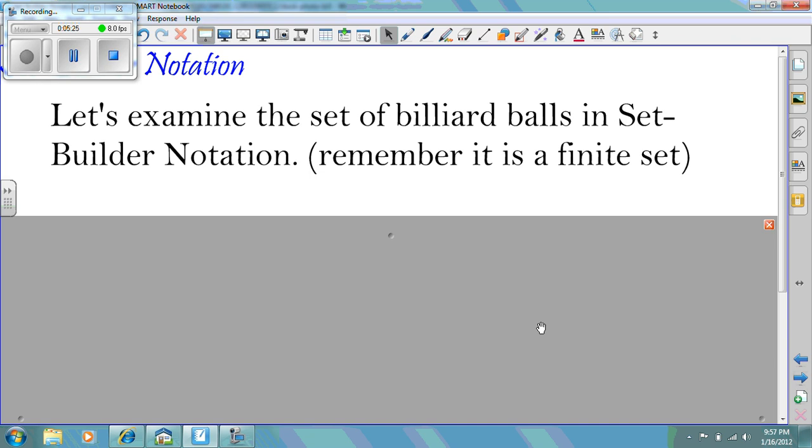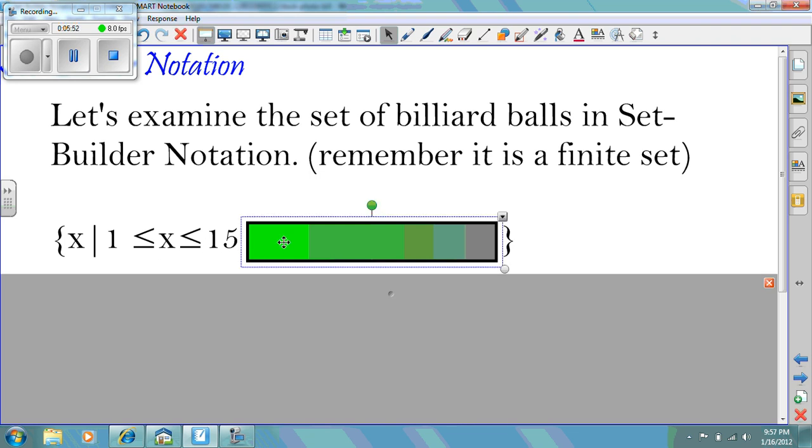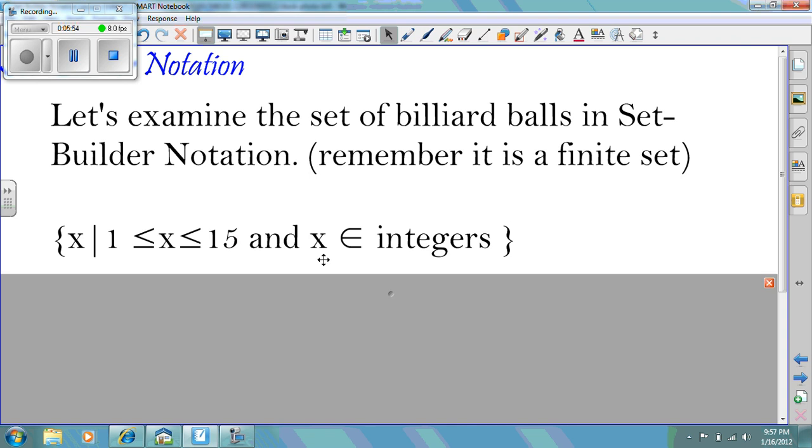Let's look at the set of billiard balls in set builder notation. Remember, this one was a finite set, the one that we could not put in interval notation because we skipped numbers. Here's what it'd look like. It looks very similar to the last problem, except we had to add an extra little item after our inequality. So the set of all X, such that X is from 1 to 15. And we put an extra note here that says, and X is an element of the integers.